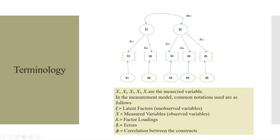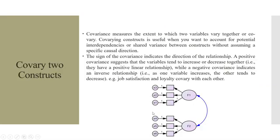There are some terminology which you will remember. X1, X2, X3, X4, and X5 are the measured variables. In the measurement model, commonly used notations are: ksi for latent factors, X is a measured variable, lambda is a factor loading, delta is an error term, and phi is for the correlation or covariance. You can see the covariance, this one. We are covarying two constructs.